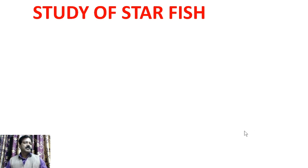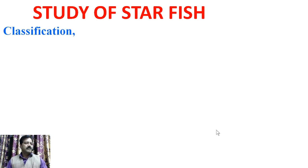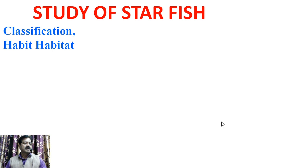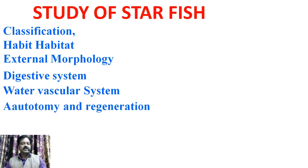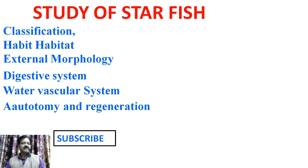In this video, I will explain the study of starfish, that is Asterias rubens, called as C-star, in which classification of Asterias rubens, habit and habitat of C-star, external morphology, digestive system, water vascular system, and autotomy and regeneration. Please keep watching till the end of this video, and if you like this video, subscribe to my channel, press the like button, and share this video with your friends.